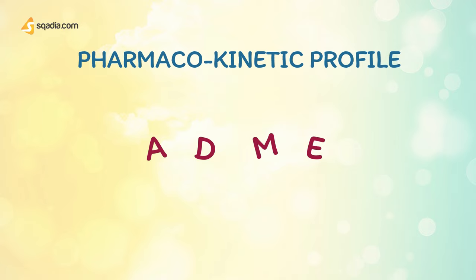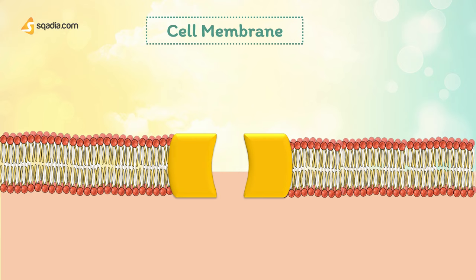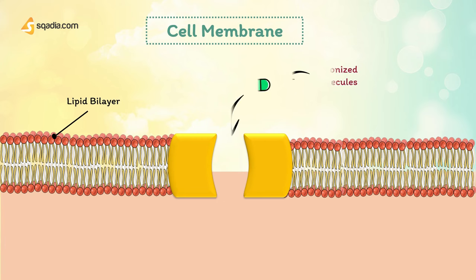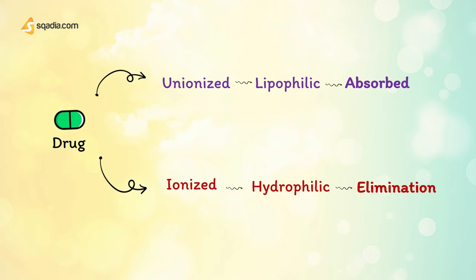First, what is absorption? Movement of a drug from its site of administration to systemic circulation is called absorption. The chemical nature of a drug strongly influences its ability to cross cell membranes. Cell membranes are composed of lipid bilayers, and thus absorption is usually proportional to the lipid solubility of the drug. Unionized molecules are far more soluble. An interesting point: a drug is absorbed when it is lipid soluble, and for its elimination, the drug has to convert into hydrophilic.